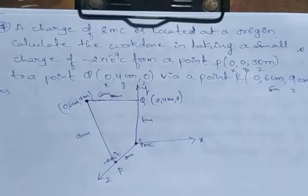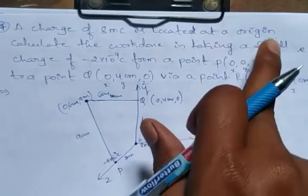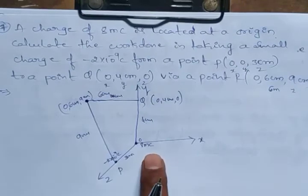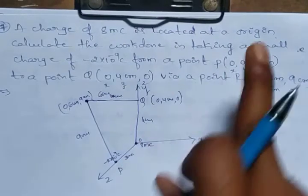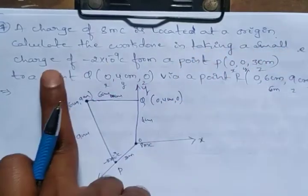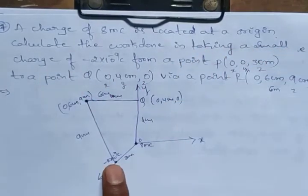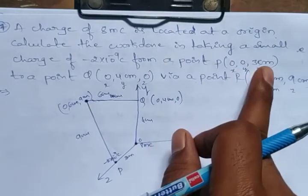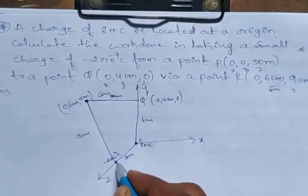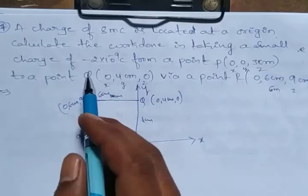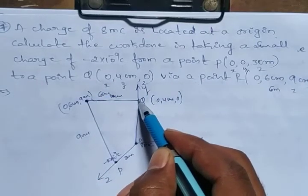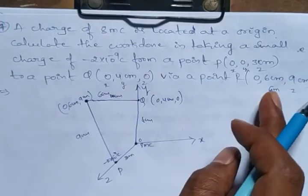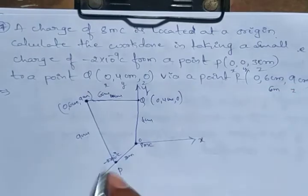So this is the question. Charge 8 milliCoulombs is located at the origin. Calculate the work done in taking a small charge of minus 2 into 10 power minus 9 Coulombs from point P at (0, 0, 3 cm) to point Q, via point R at (0, 6 cm, 9 cm).